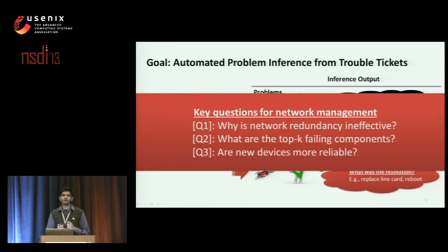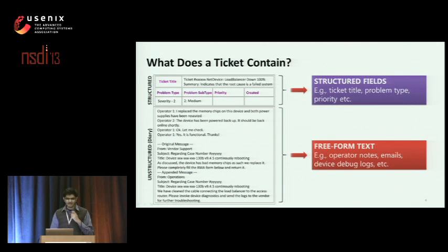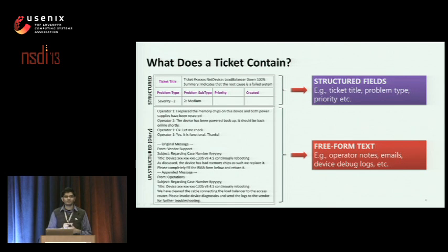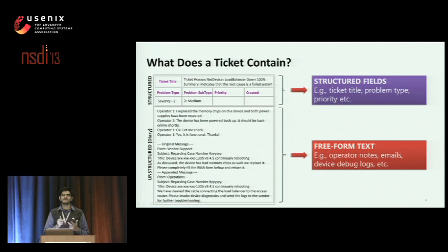But before that, let me show you what information a ticket contains to make this possible. Tickets comprise two parts: structured fields and freeform text. The top part of the slide shows structured fields such as ticket title, problem type, and priority. The bottom part shows freeform text that contains a variety of natural language elements such as IM conversations, email exchanges between operators, and device debug logs. Our goal is to use this information to extract the key features: problems, activities, and actions.